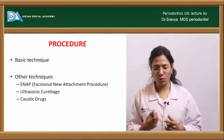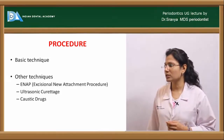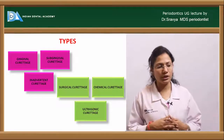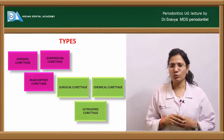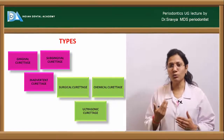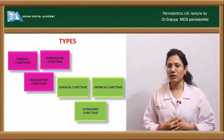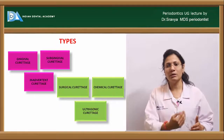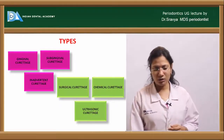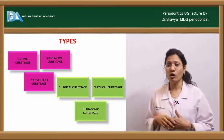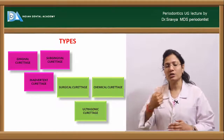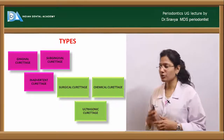Inadvertent curettage is when the goal of therapy was root planing, but while doing the root planing procedure, the soft tissue wall of the pocket is unintentionally removed. Subgingival curettage involves removing diseased tissue between the gingival margin and the alveolar crest, going slightly beneath the base of the pocket.